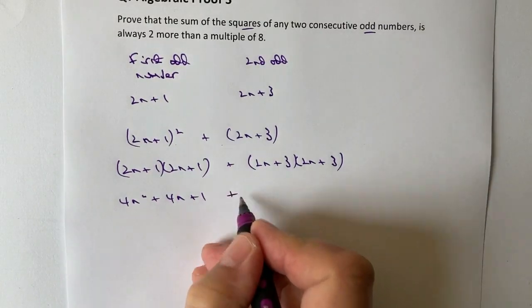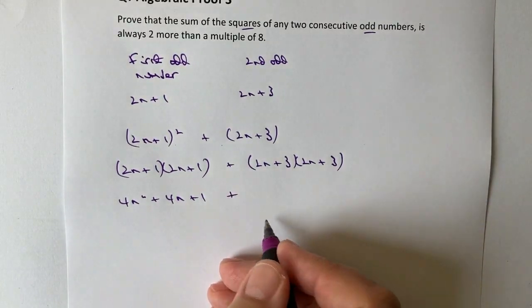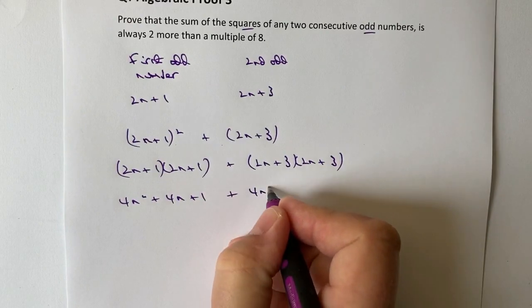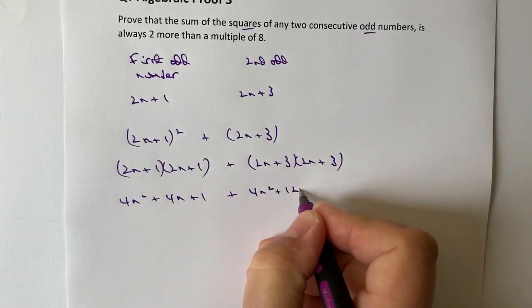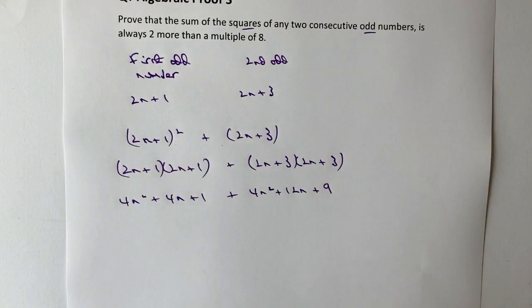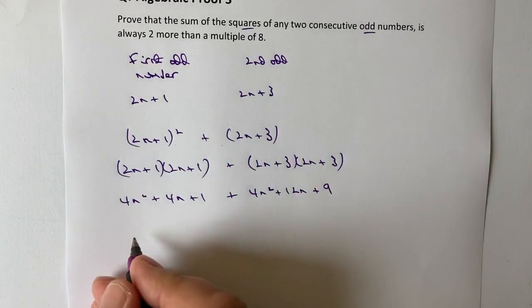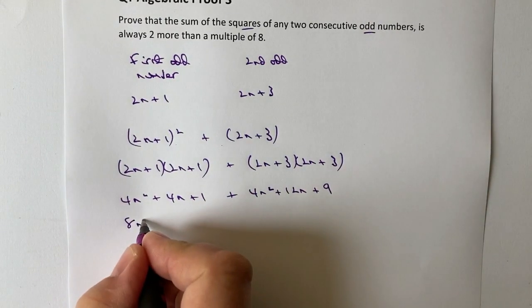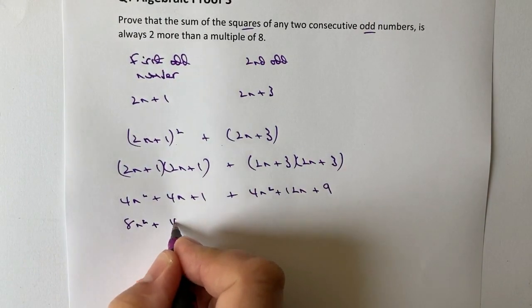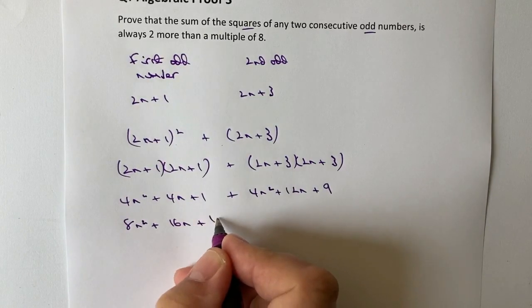So this second one is 2n times 2n is going to be 4n squared. And then I've got plus 12n plus 9. All right. So let's tidy everything up a little bit. So bring all the like terms together. And I'm going to get 8n squared plus 16n plus 10.